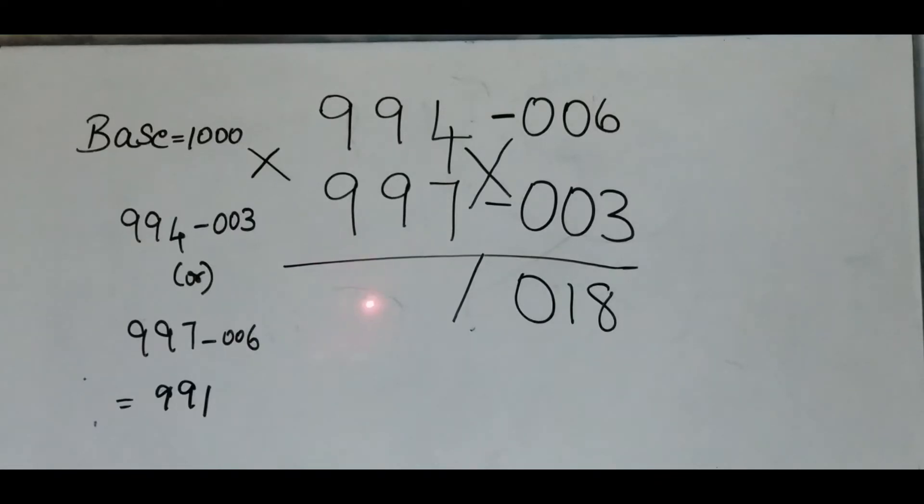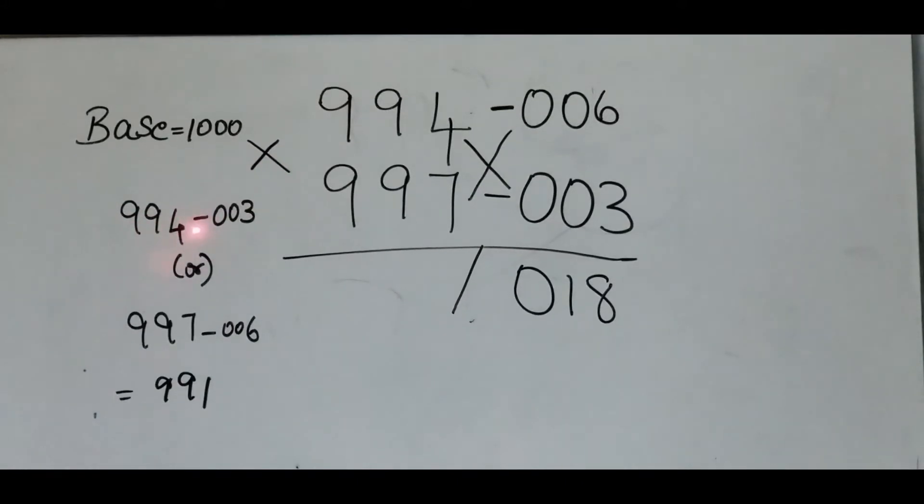For the left side, either cross subtract 994 minus 003 or 997 minus 006. They both give the same answer, which is 991. Write 991 over here.